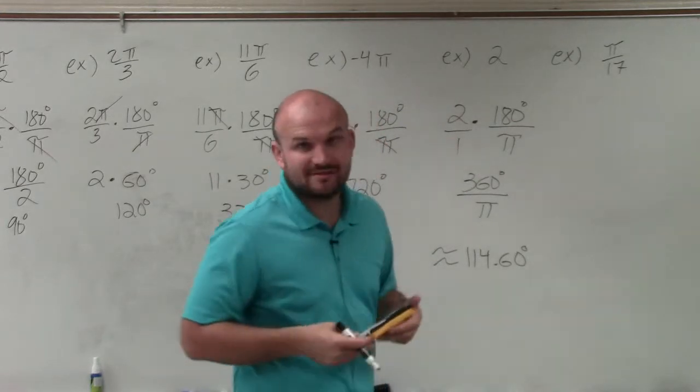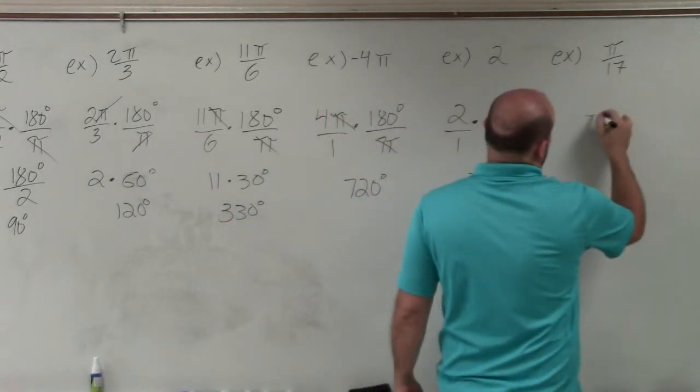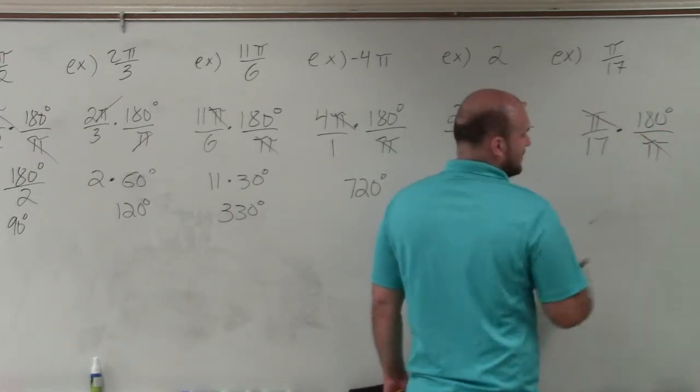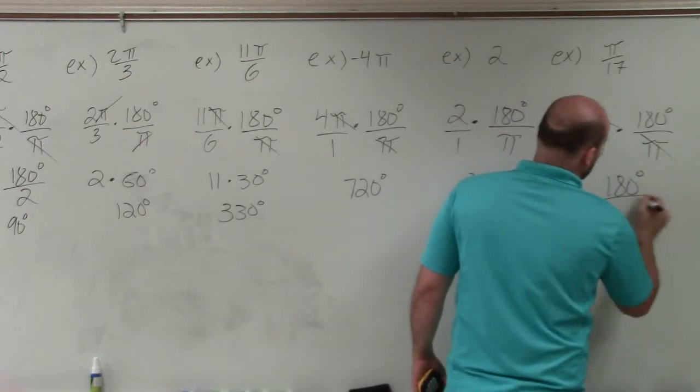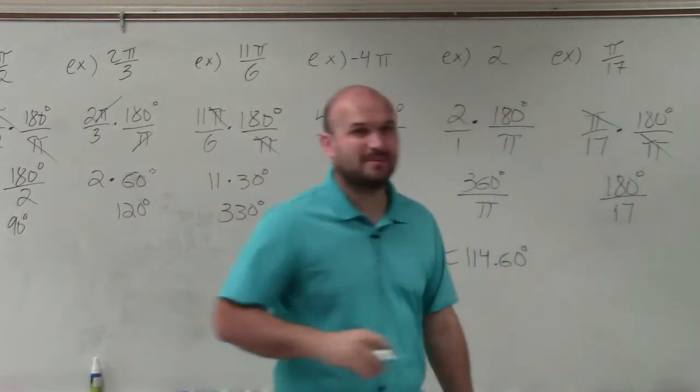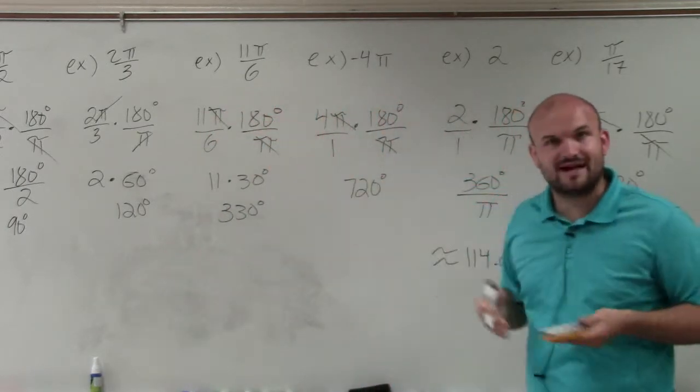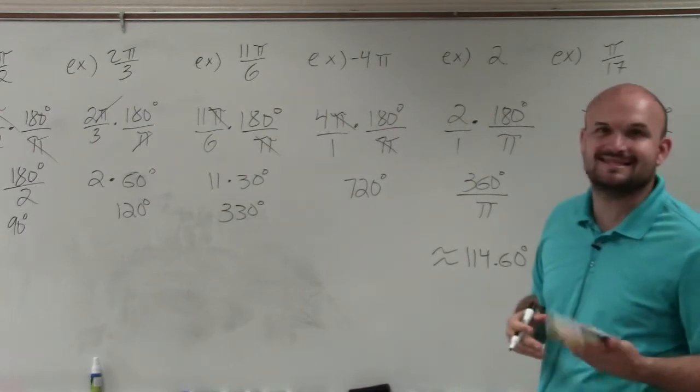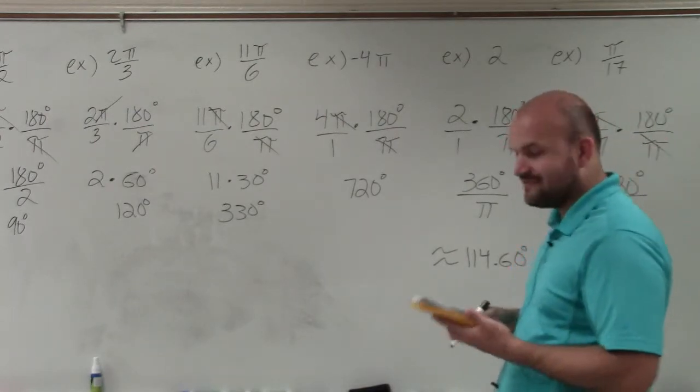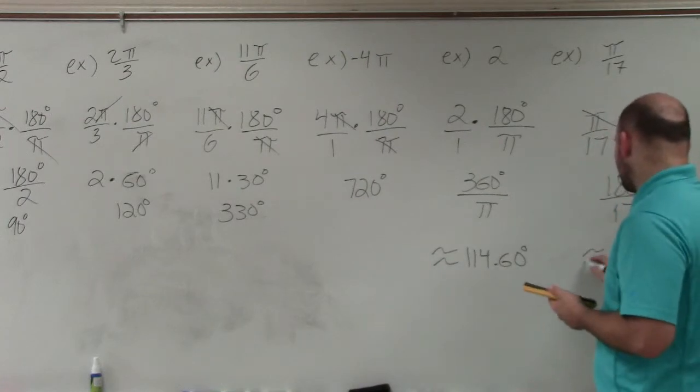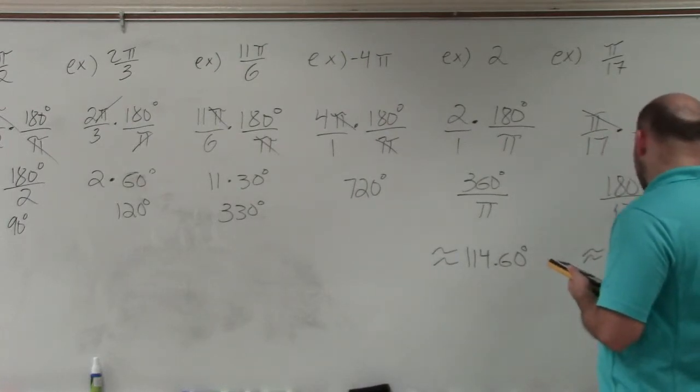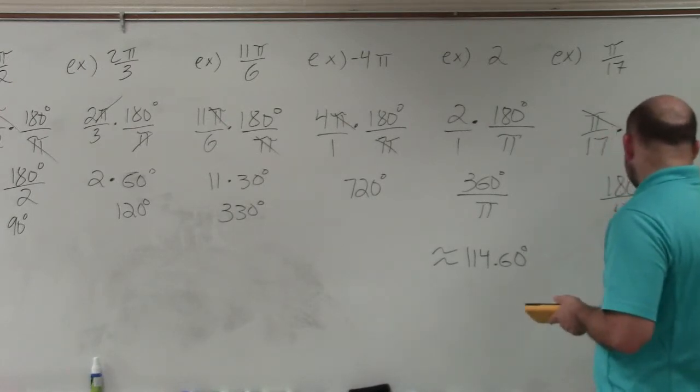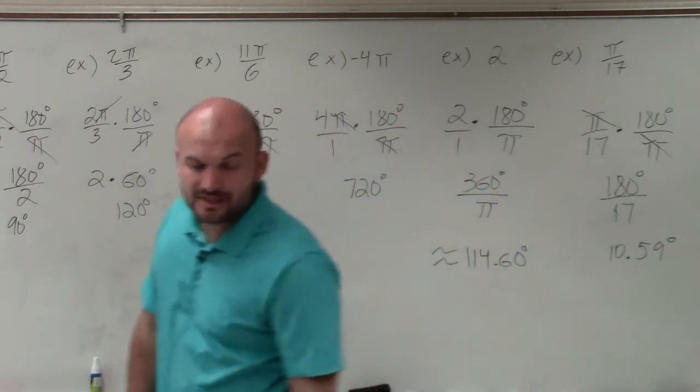So then the last one is I have π over 17. We're going to take π over 17 times it by 180 degrees divided by π. The π is divided out here. And now I have 180 divided by 17. In my earlier problems, that divided out pretty well. But in this case, when you divide 180 divided by 17, you can see that it does not divide evenly. However, I can approximate this to 10.59, which we'll just round it. I'll round it to 10.59 degrees.